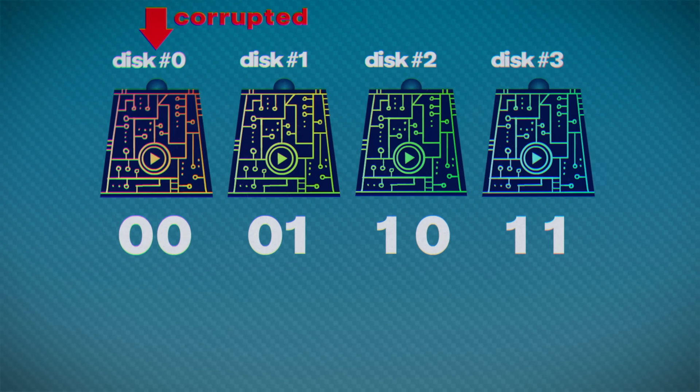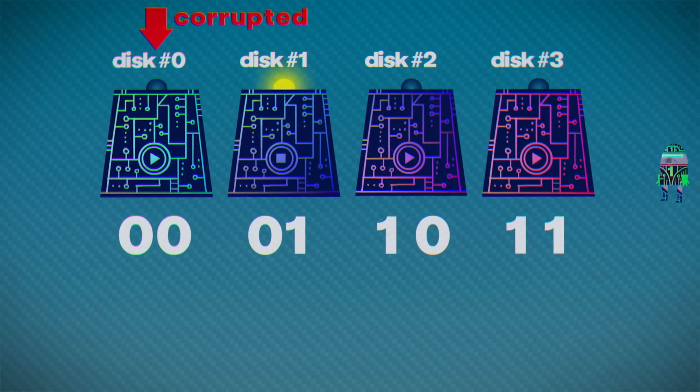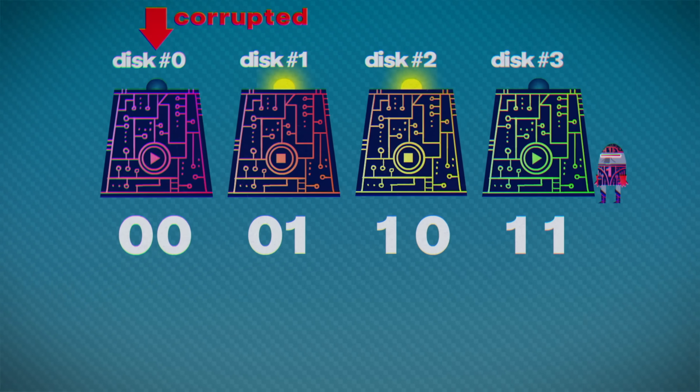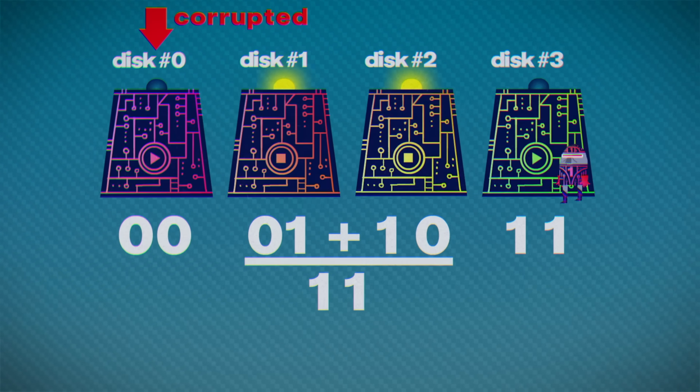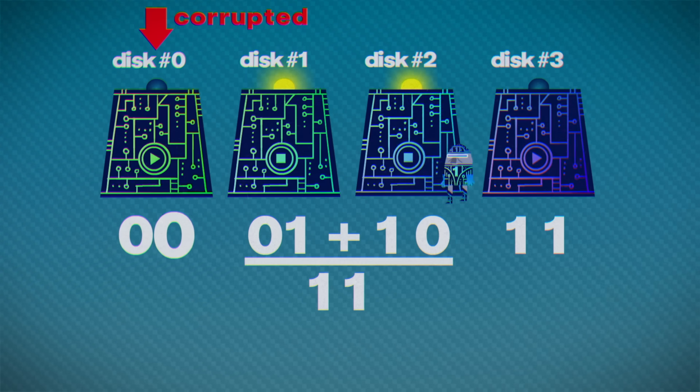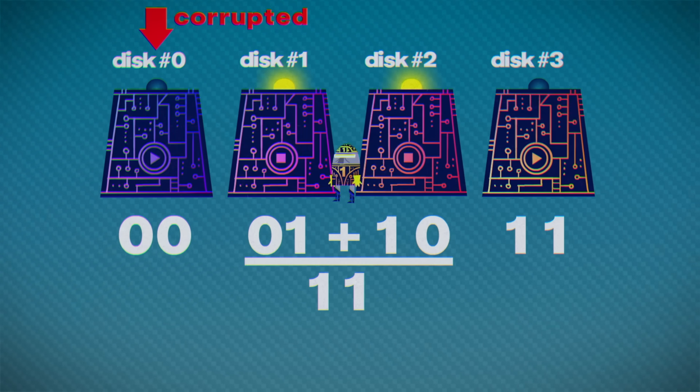What if zero-zero was the corrupted disk, and zero-one and one-zero were on? Here, the sum of the lit disks is one-one, but we need to change this to a sum of zero-zero with the flip of one switch.